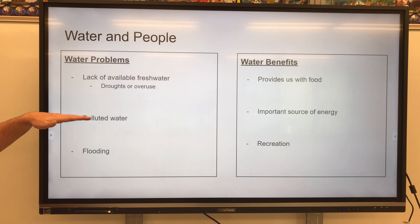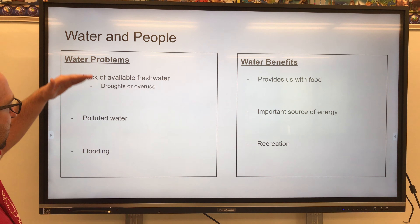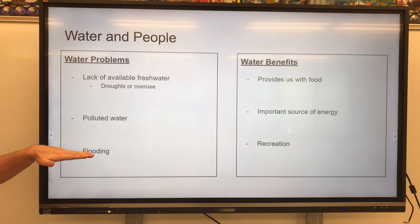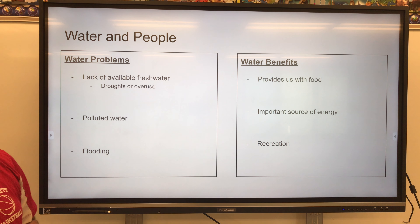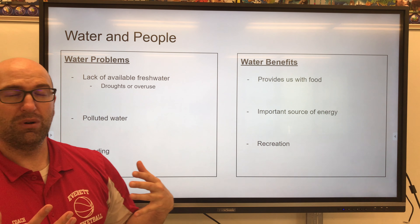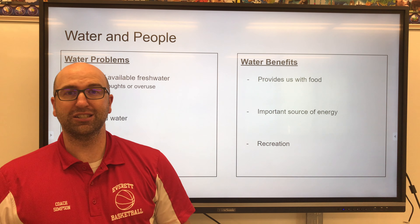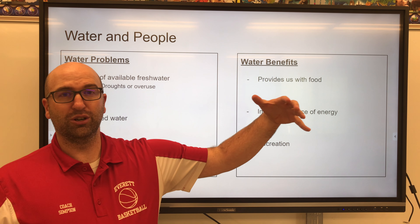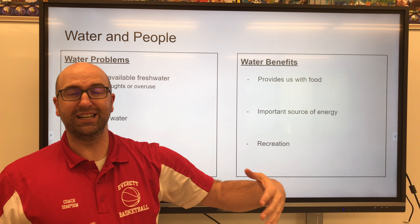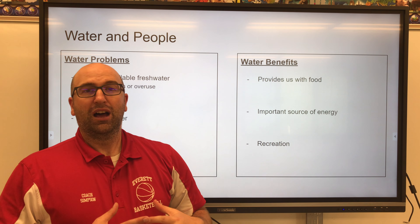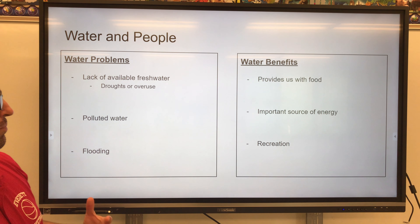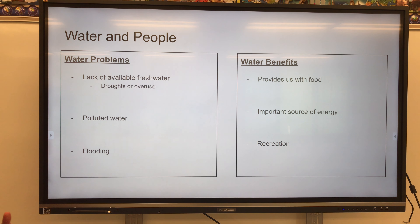We have polluted water as well, and that's a problem that humans created. And flooding — flooding from heavy rainstorms. If you're in India during the monsoon season, heavy flooding can actually destroy parts of villages.